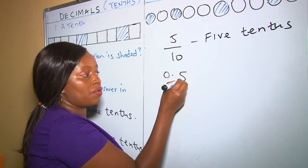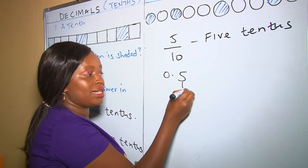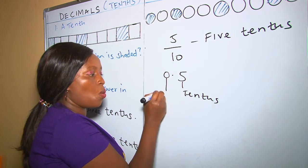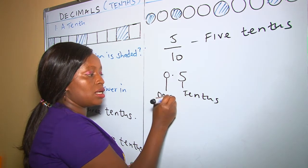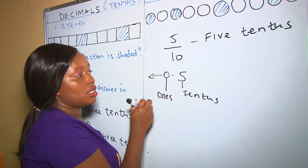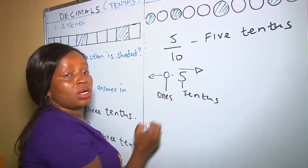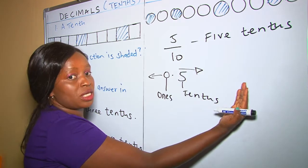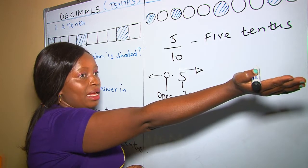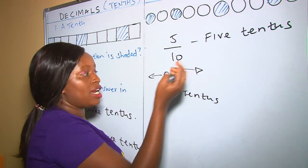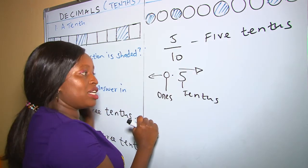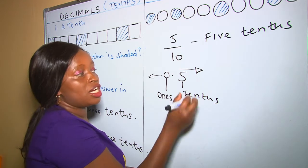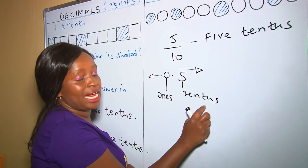The place value of this digit is tenths. The place value of 0 is 1s. These numbers are reducing as you go to the right and increasing as you go to the left. So these are 5 tenths. In words, it's going to be still 5 tenths.